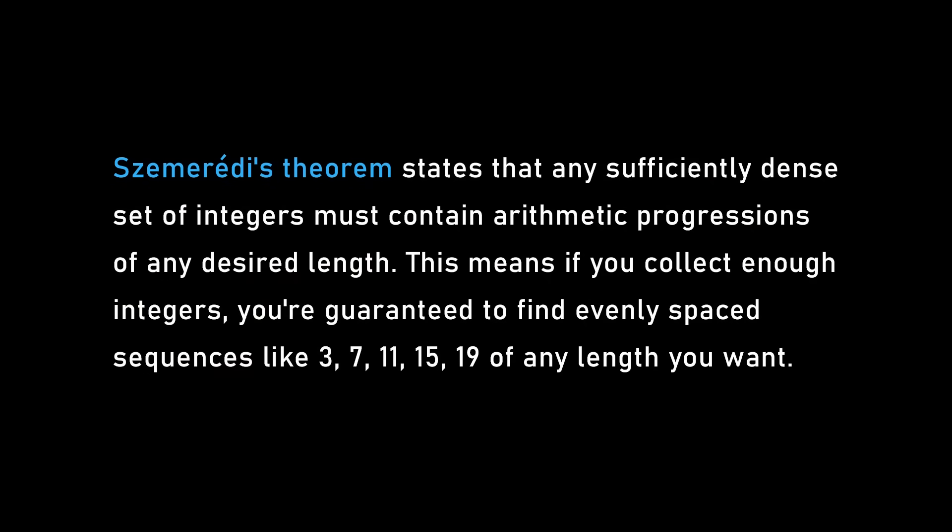There's this old theorem in mathematics called Szemerédi's theorem, proven in the 1970s. It concerns trying to find a certain type of pattern in a set of numbers — the pattern is an arithmetic progression, things like 3, 5, and 7, or 10, 15, and 20. Szemerédi proved that any set of numbers that are sufficiently big — what's called positive density — has arithmetic progressions in it of any length you wish.